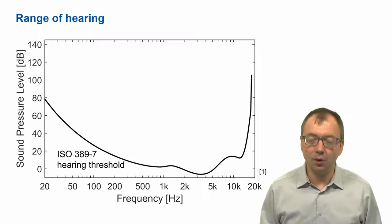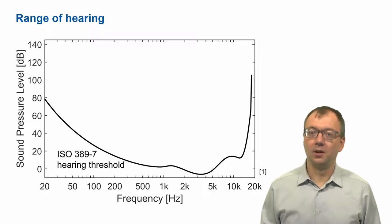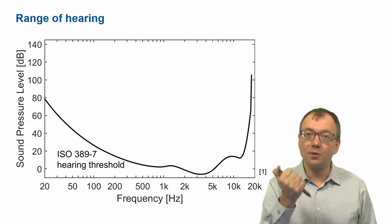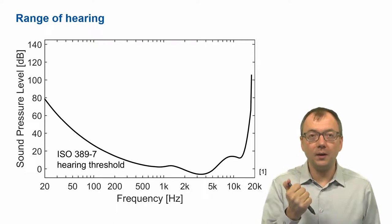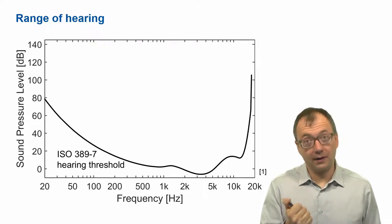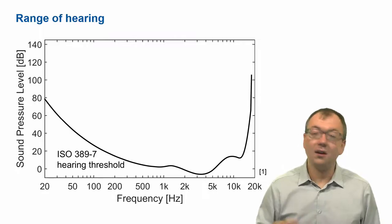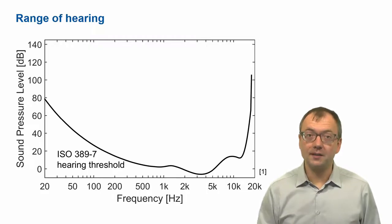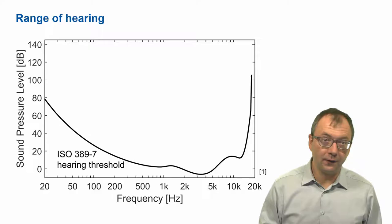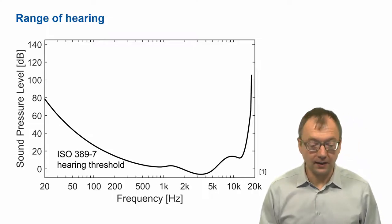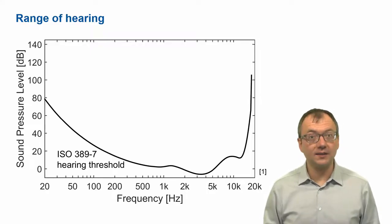The threshold in quiet is measured by playing tones and having somebody detect the presence of the tone. When the tone is heard, the person presses a button to indicate the tone is just being heard. By varying the level of the tone, we can plot from which point 50% of trials the tone was heard. You can see here the level of the tone as a function of its frequency, depicted as the threshold in quiet, which is also an ISO standard.